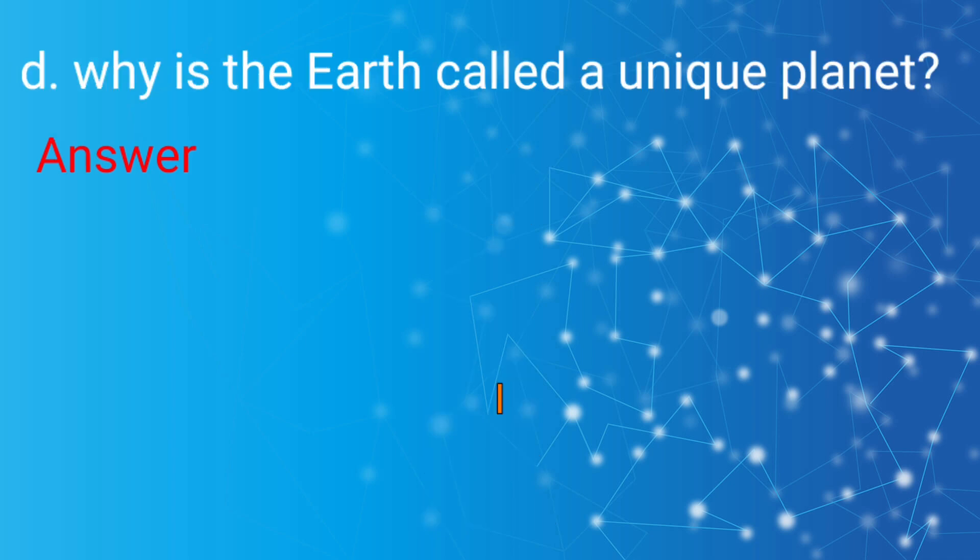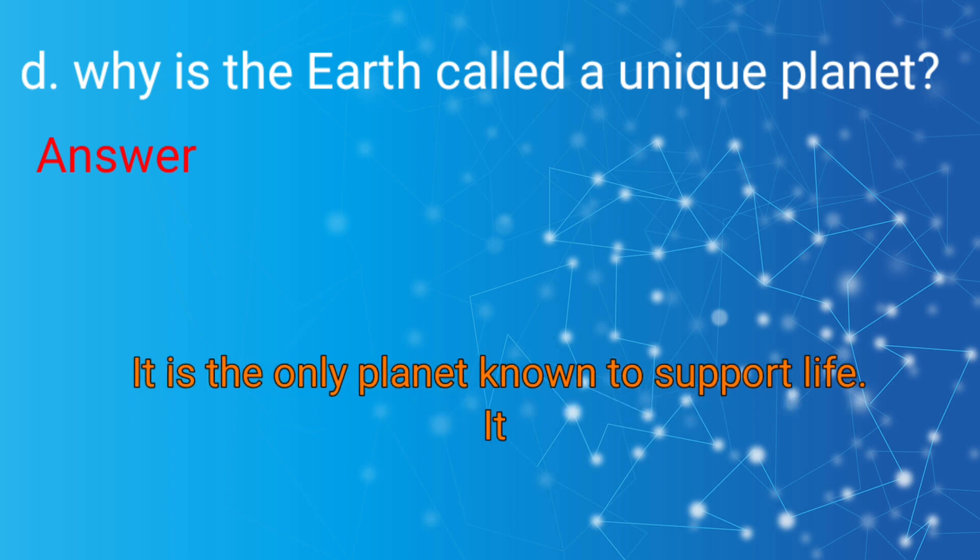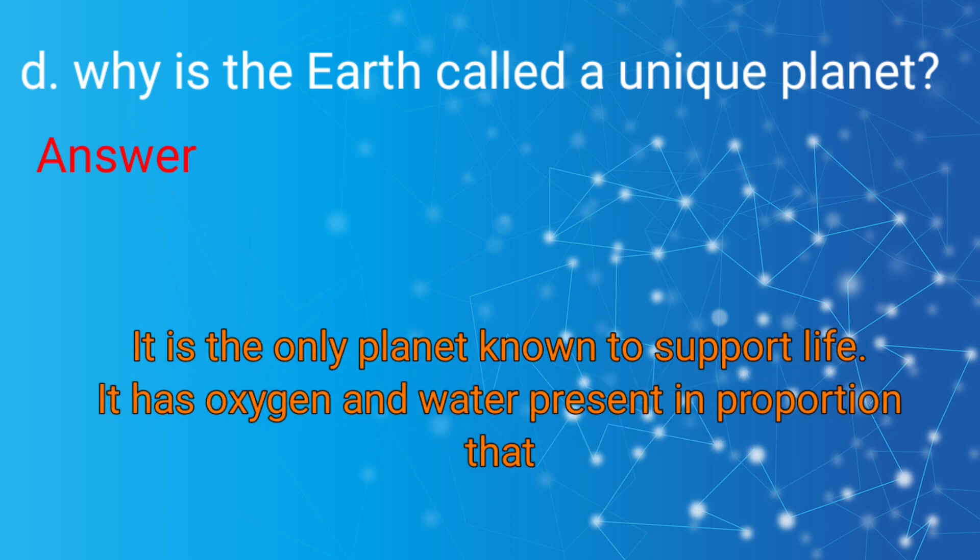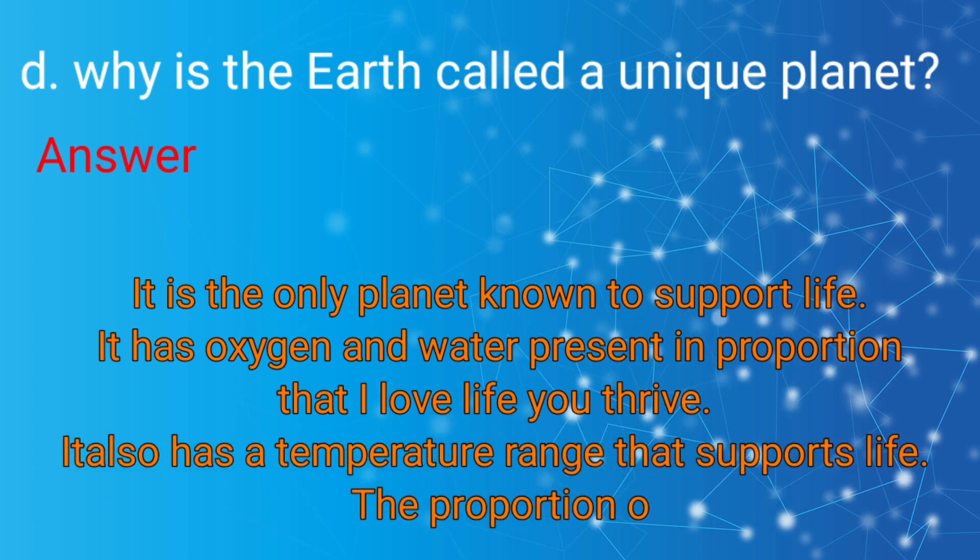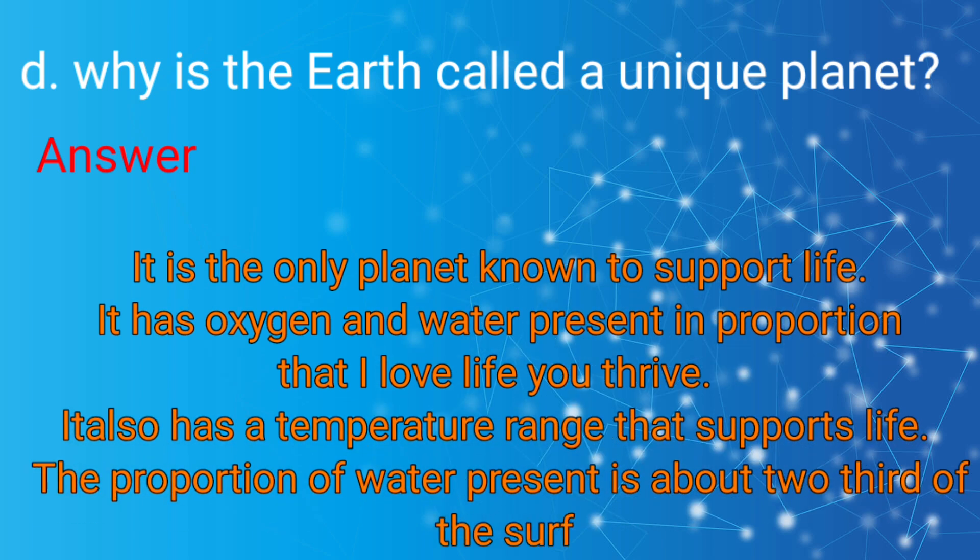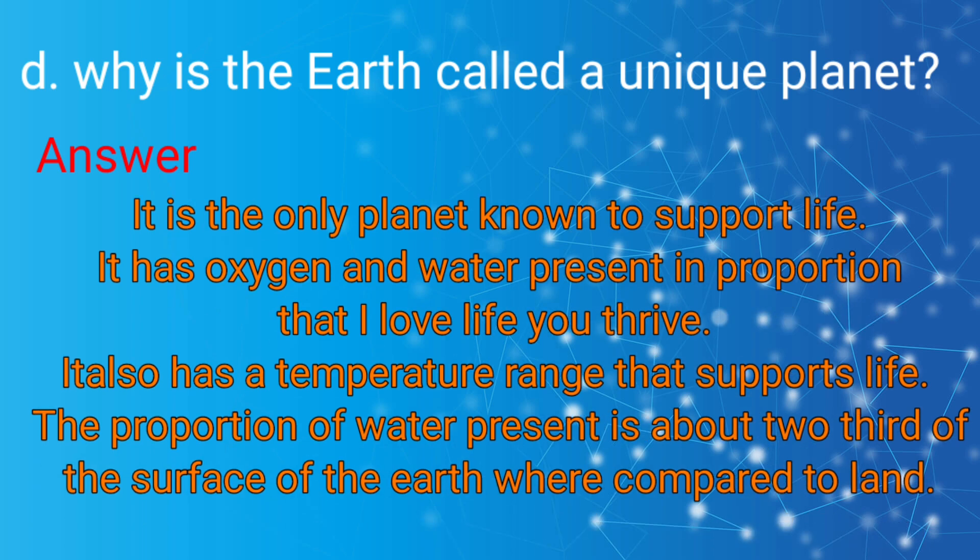D: Why is the Earth called a unique planet? Answer: It is the only planet known to support life. It has oxygen and water present in proportions that allow life to thrive. It also has a temperature range that supports life. The proportion of water present is about two-thirds of the surface of the Earth compared to land.